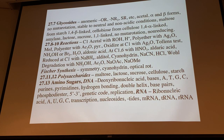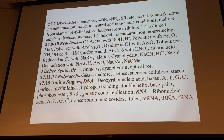We can link sugars into disaccharides like maltose, cellobiose, and sucrose, or polymerize them into cellulose — which has a 1→4 beta linkage — or starch (amylose, amylopectin) — which has a 1→4 alpha linkage. Sucrose is glucose and fructose linked as a 1→2 disaccharide. Because it's a full acetal with no free hemiacetal, sucrose is non-mutarotating and a non-reducing sugar.